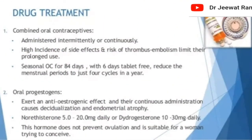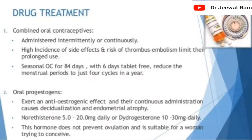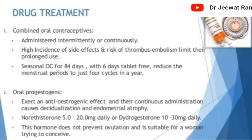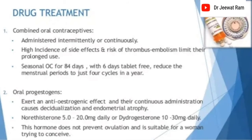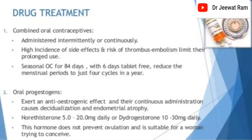Drug treatment of endometriosis. Combined oral contraceptives, administered intermittently or continuously — high incidence of side effects and risk of thromboembolism limit prolonged use. Seasonal oral contraceptives for 84 days with 6 days tablet-free reduce menstrual periods to four cycles per year. Oral progesterone exerts an anti-oestrogenic effect; continuous administration causes decidualization and endometrial atrophy. Norethisterone 5–20 mg daily or dydrogesterone 10–30 mg daily; the latter does not prevent ovulation and is suitable for women trying to conceive.